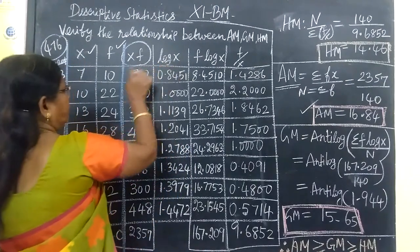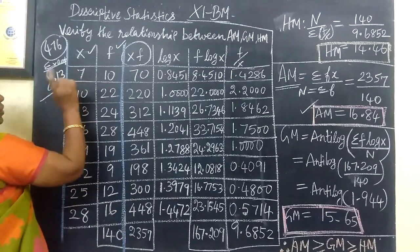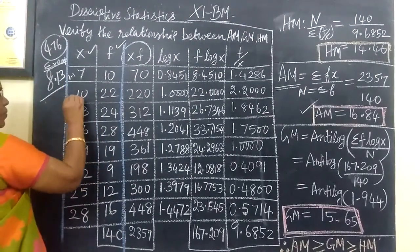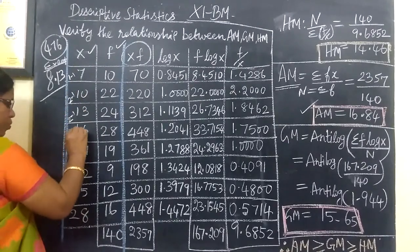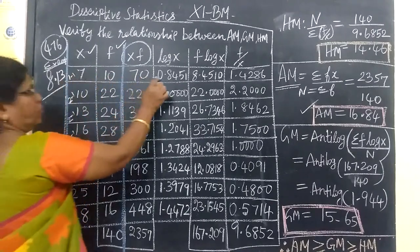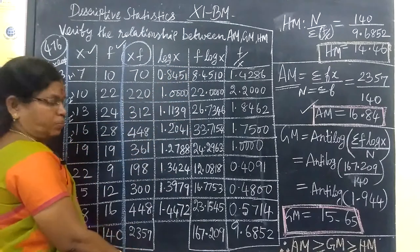For the characteristic, the formula is number of digits minus 1. So 2 minus 1 equals 1, then 1 minus 1 is 0. So our characteristic is 0. This is how we find the log.